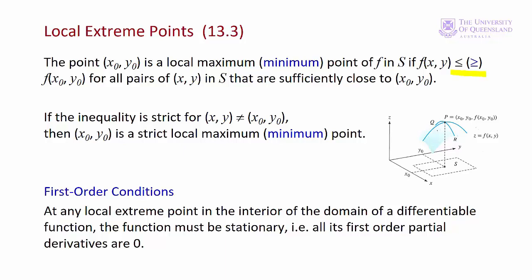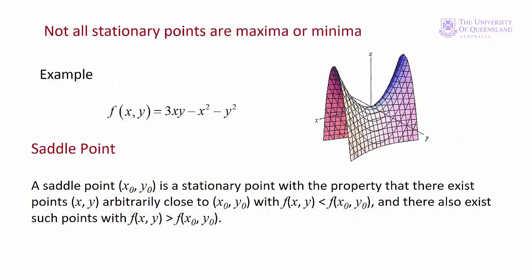Now let's look at a case where a stationary point is not a local maximum or a local minimum. A saddle point, say at x₀, y₀, is a stationary point with the property that there exist points close by where the function is less than the function at x₀, y₀, and other points close by where the function is greater than the function at x₀, y₀. In this diagram, we have a saddle point here. We can see that if we move in the y direction, the function decreases. If we move in the x direction, the function increases. It should be obvious where the name saddle point comes from.